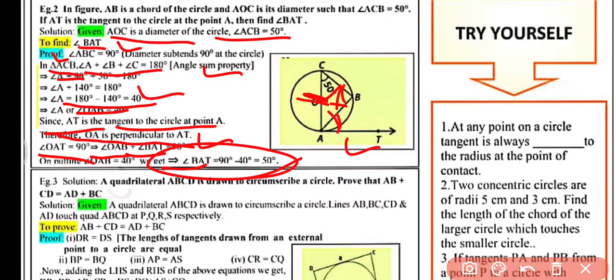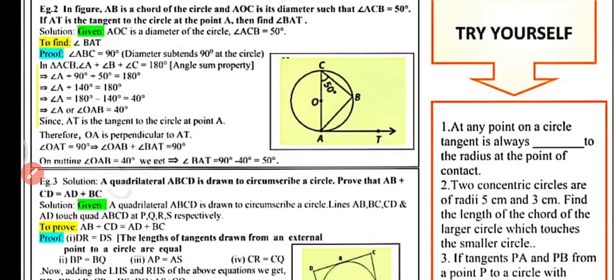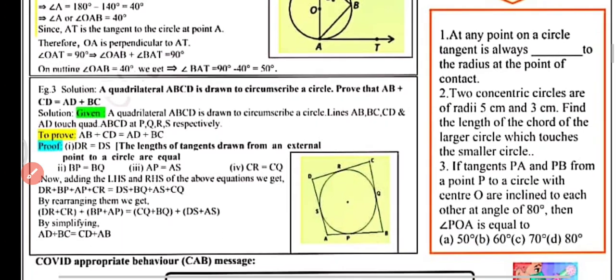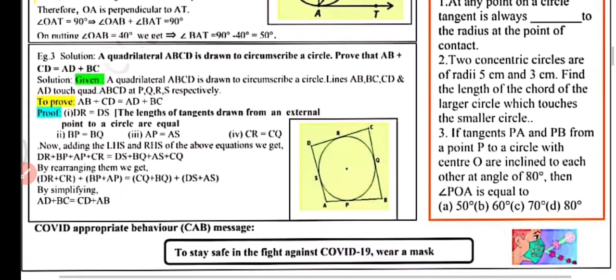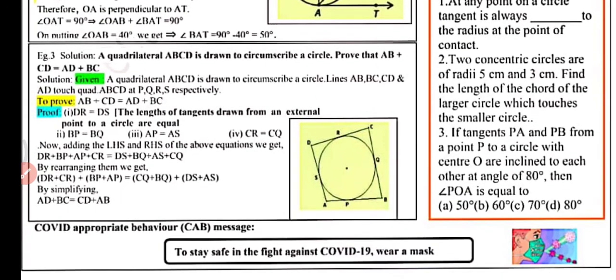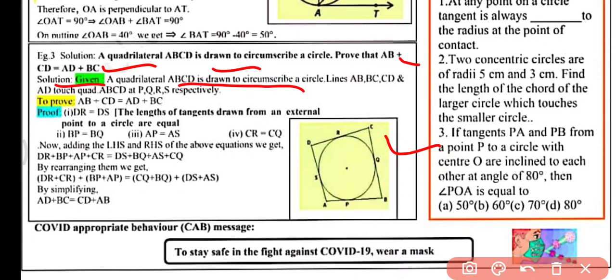Example 3: A quadrilateral ABCD is drawn to circumscribe a circle. Prove that AB + CD = AD + BC. We need to prove that the sum of opposite sides are equal. Given: quadrilateral ABCD circumscribes a circle, with sides AB, BC, CD, and AD touching the circle.